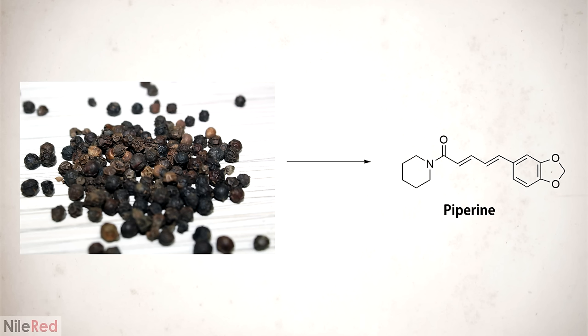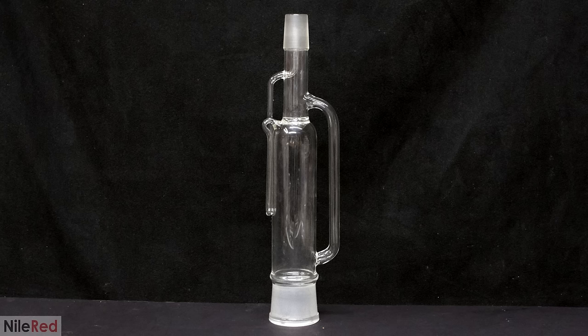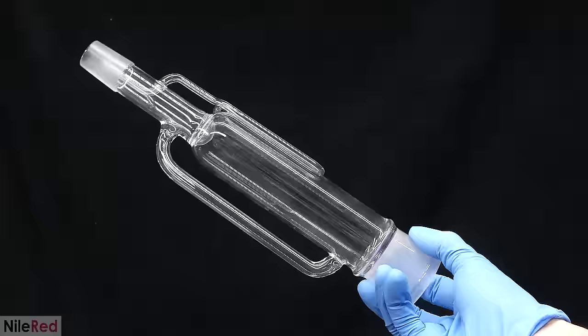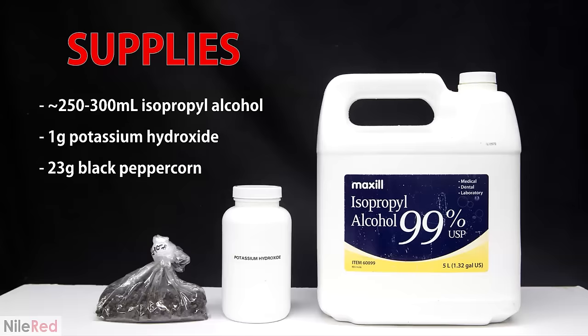So today I'm going to be extracting piperine from some regular black pepper. The classic way of doing this requires repeated solvent washings which is both wasteful and labor intensive. To help me out because I'm lazy, I've decided to use a Soxhlet extractor which will allow me to do less work and use less solvent. The Soxhlet extractor is actually a really cool piece of glassware and I'll explain exactly how it works later in the video.